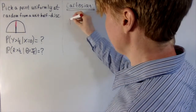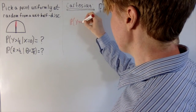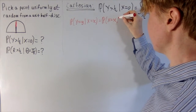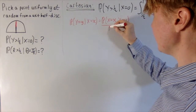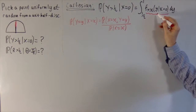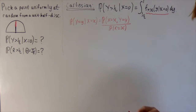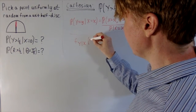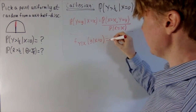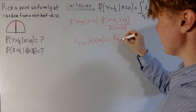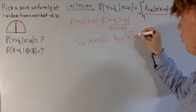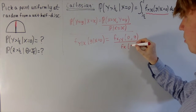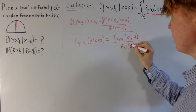This is very similar to how, if you were looking at a discrete random variable, the probability y equals y given x equals x, you can write this as the probability of the intersection divided by the probability x equals x. We can do a similar thing here for the density. So f of y given x equals zero — we can rewrite this as the joint density function for x and y at (0, y), divided by the marginal density function for x at zero.